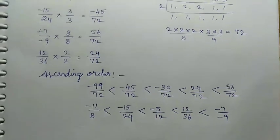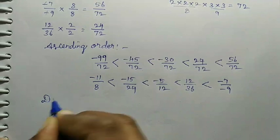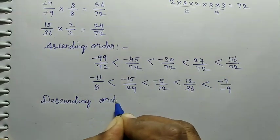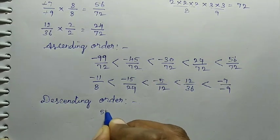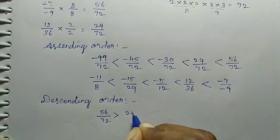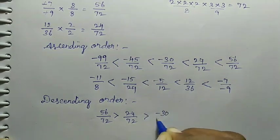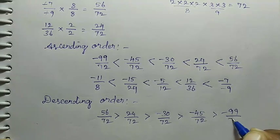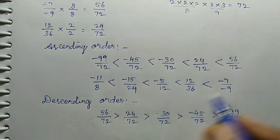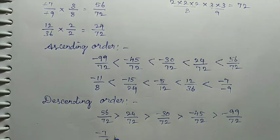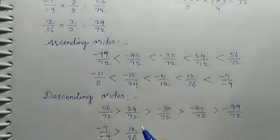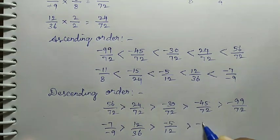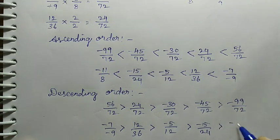Now we have ascending order. For descending order it is very easy — descending order is just the reverse of ascending order. So: 56/72 > 24/72 > minus 30/72 > minus 45/72 > minus 99/72. Writing with actual fractions: minus 7 divided by minus 9 > 12/36 > minus 5/12 > minus 15/24 > minus 11/8.